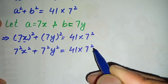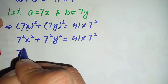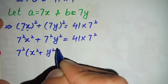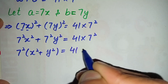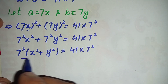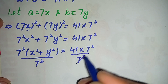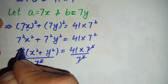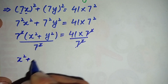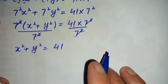From the left hand side, we take 7 squared as common, leaving x squared plus y squared, and this equals 41 times 7 squared. Now there is 7 squared on both sides, so we divide both sides by 7 squared to eliminate it. The 7 squared cancels on both sides, leaving us with x squared plus y squared is equal to 41.